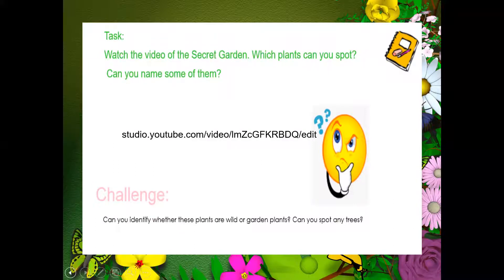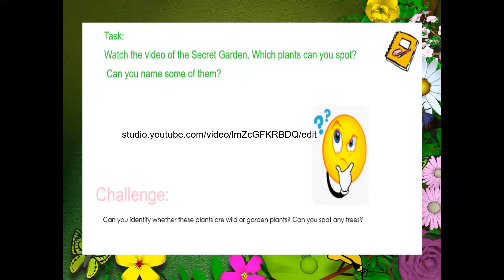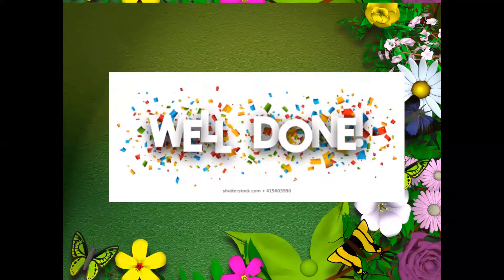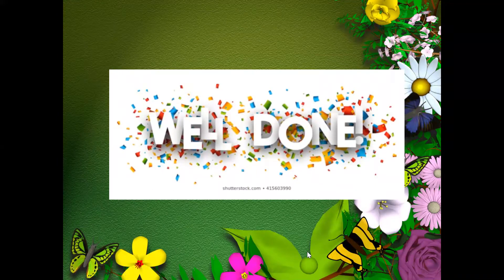Your task today is to watch the video of the secret garden — follow the link here to go on our YouTube. Which plants can you spot? Can you name some of them? You can also spot some trees or plants on your way to the park and try to name some of them. Your challenge today is to identify whether these plants are wild or garden plants. Can you spot any trees? I hope you enjoyed today's science lesson, Year One. Well done, everybody — I will see you all next time. Bye!